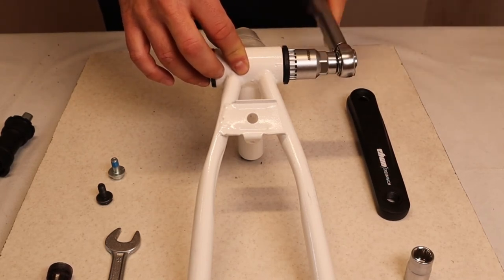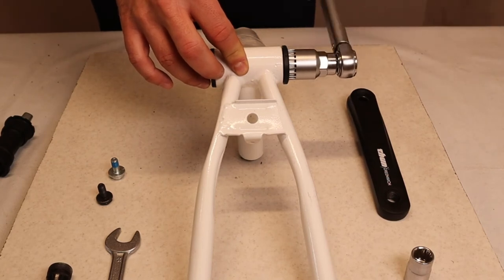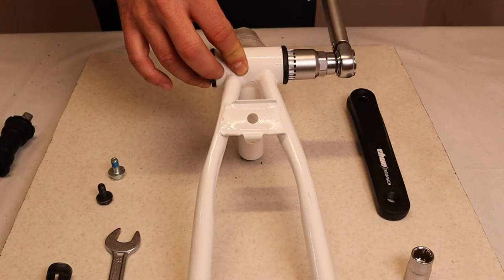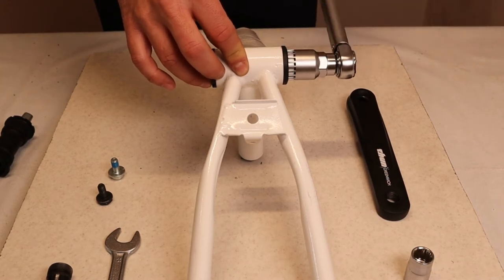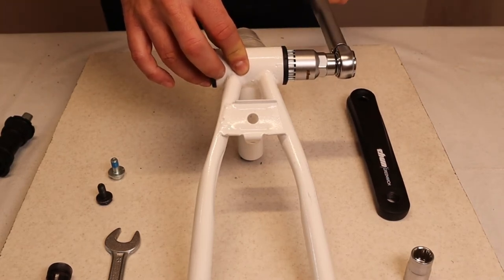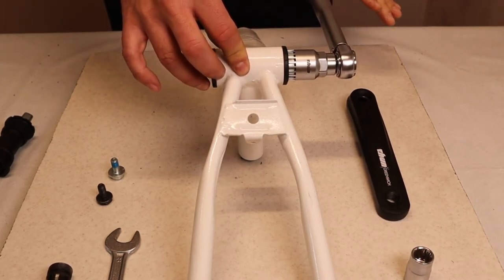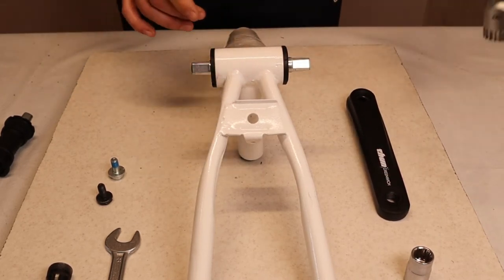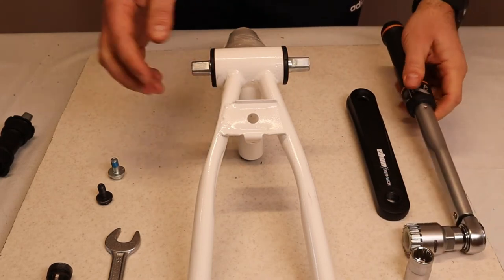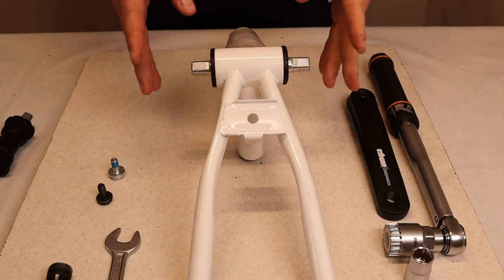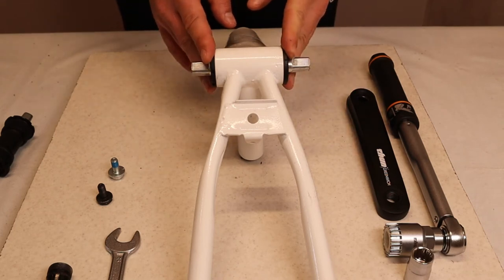So 30 to 35 newton meters it's very important to know not to overdo it because with steel cups we are used to doing it every time. So here we have again here 35 newton meters and now the cups are screwed in in the right way. So no grease and 30 to 35 newton meters always.